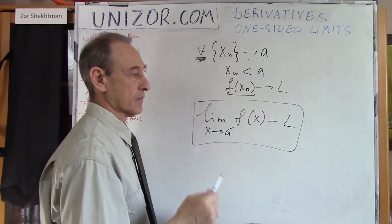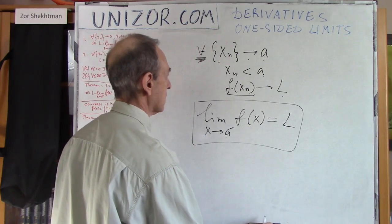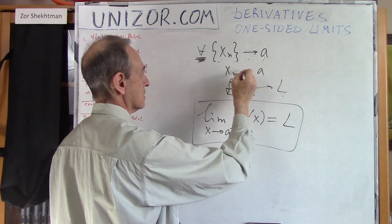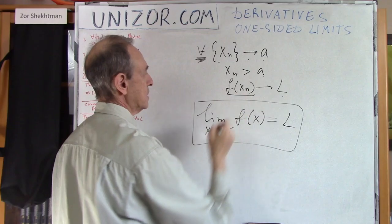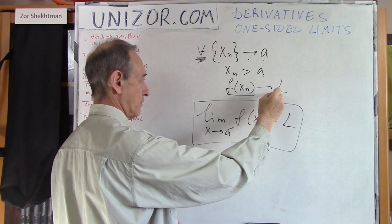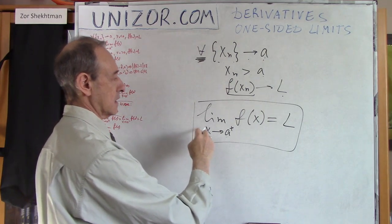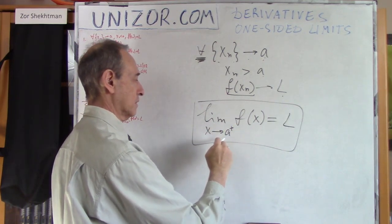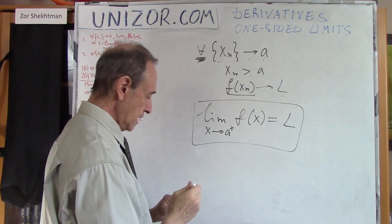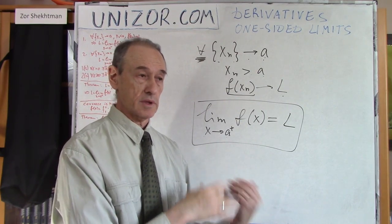Obviously, we can completely symmetrically define the limit from the right. If for any sequence of arguments approaching a being always greater than a, the corresponding sequence of function values approaches L, then we say — denoted with a plus superscript — that the right limit of function f as x goes to a is equal to L. These are the two sequence-based definitions of the left and right limits.